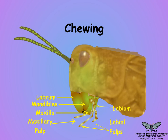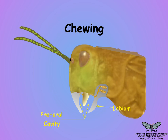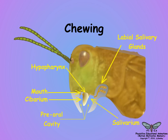The various mouthparts originated ancestrally from external appendages that surrounded the true mouth to form a preoral cavity. The preoral cavity is divided into an anterior cibarium and a posterior salivarium, into which the paired labial salivary glands empty through a common duct.